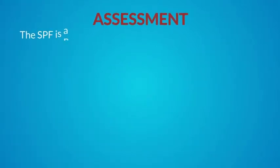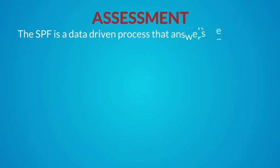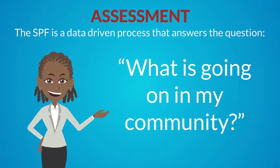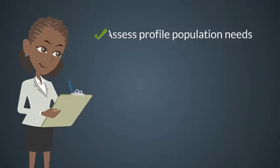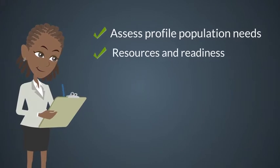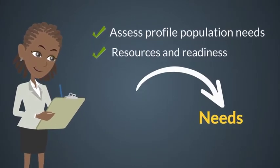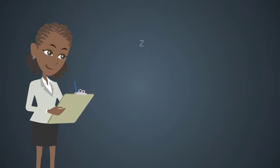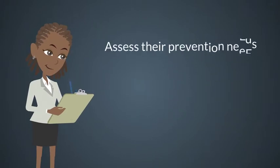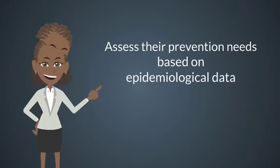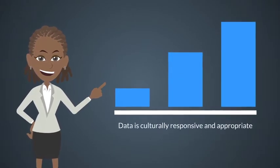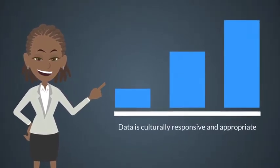The first phase of the SPF is Assessment. The SPF is a data-driven process that answers the question: what is going on in my community? We want to assess, profile, and address population needs, resources, and readiness to address needs and gaps. We want to assess prevention needs based on epidemiological data, and culturally, we want to make sure that the data is culturally responsive and appropriate.